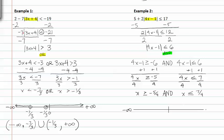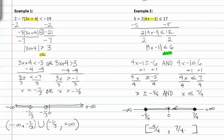Graphing: negative infinity to the left, positive infinity to the right, zero in the center. X greater than or equal to negative 5 fourths gets a closed dot heading to the right, and x less than or equal to 7 fourths gets a closed dot heading to the left. The interval on which this and compound inequality is true is between negative 5 fourths and 7 fourths, written as the closed interval negative 5 fourths comma 7 fourths.